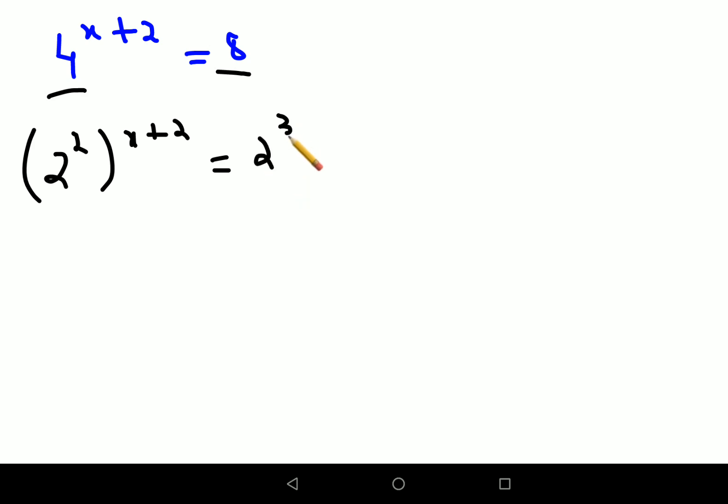Here, a raised to m the whole raised to n can be written as a raised to m into n. So this will look like 2 raised to 2 times x plus 2 equals to 2 raised to 3.